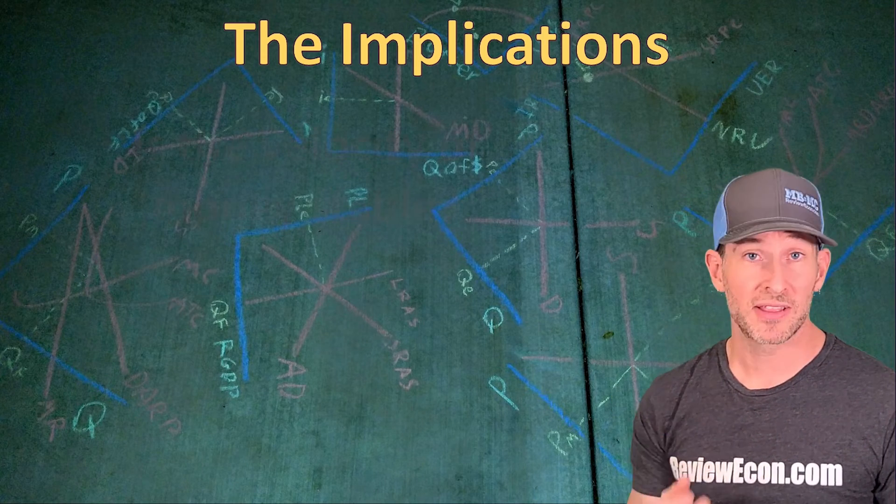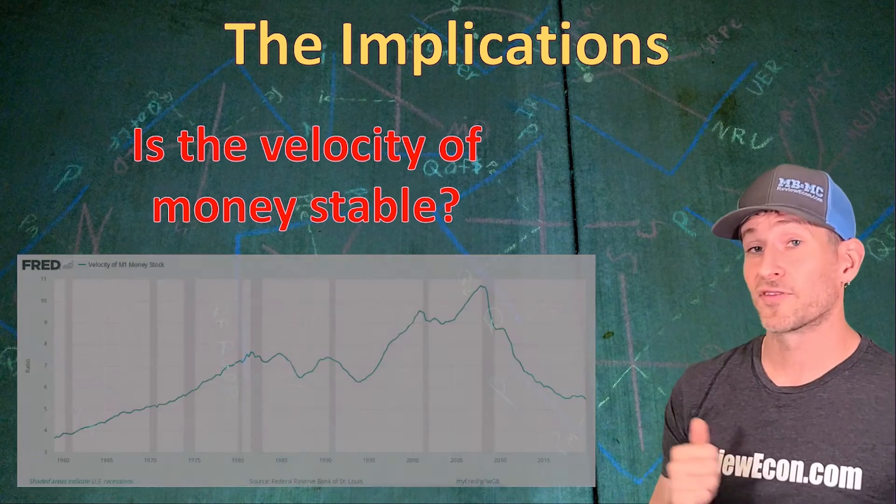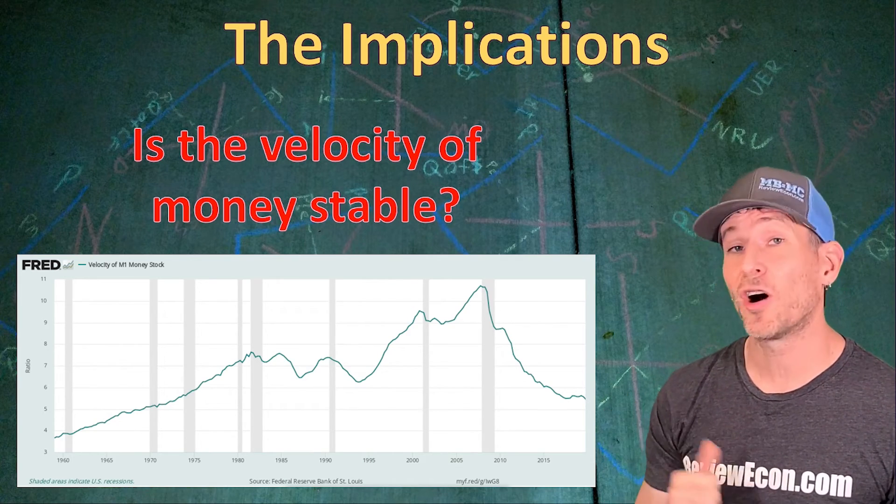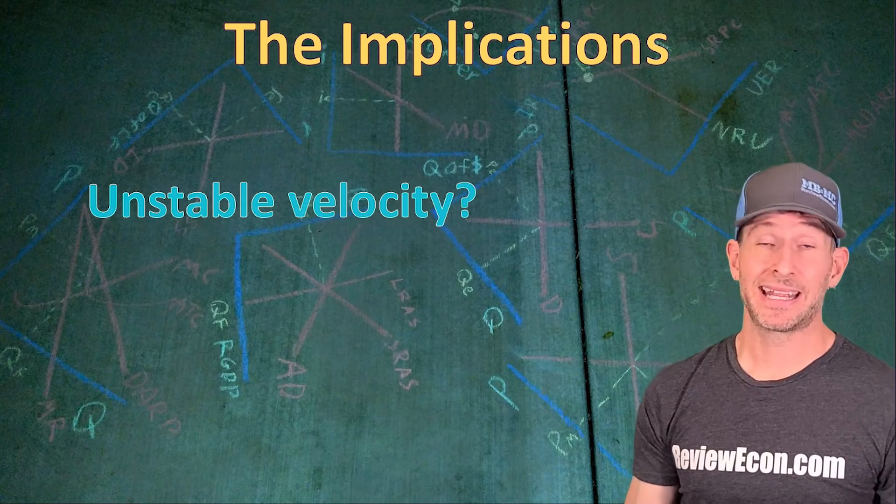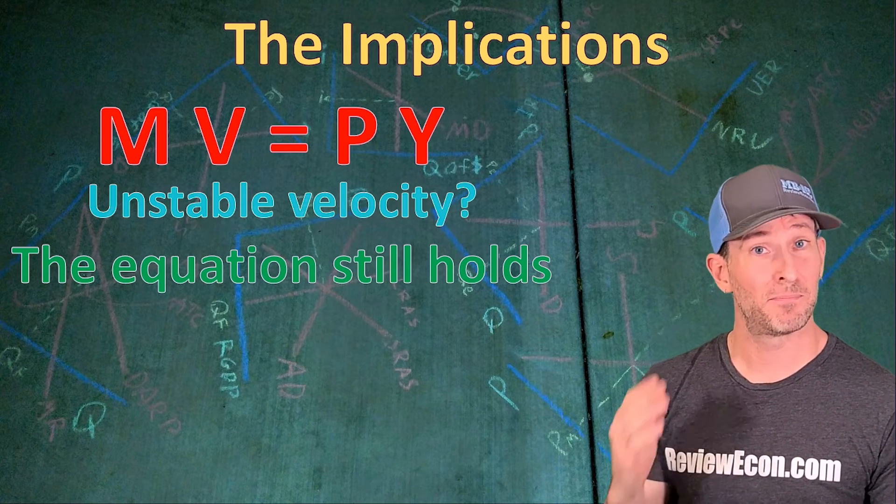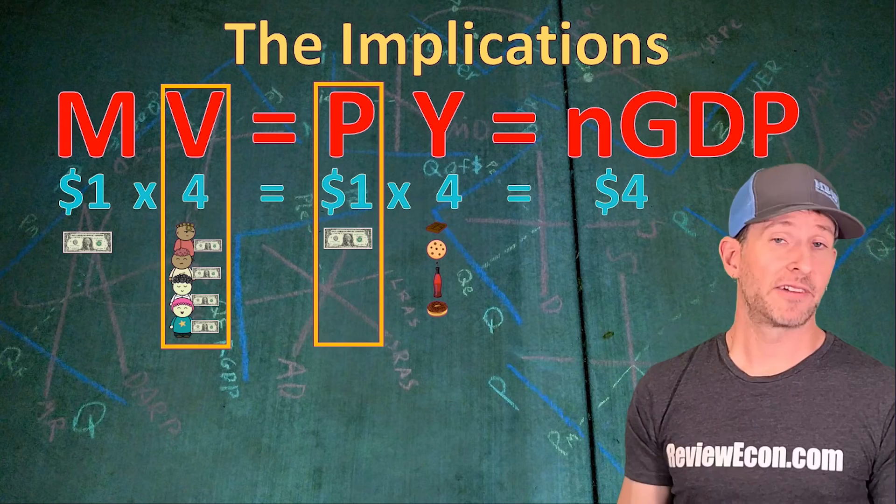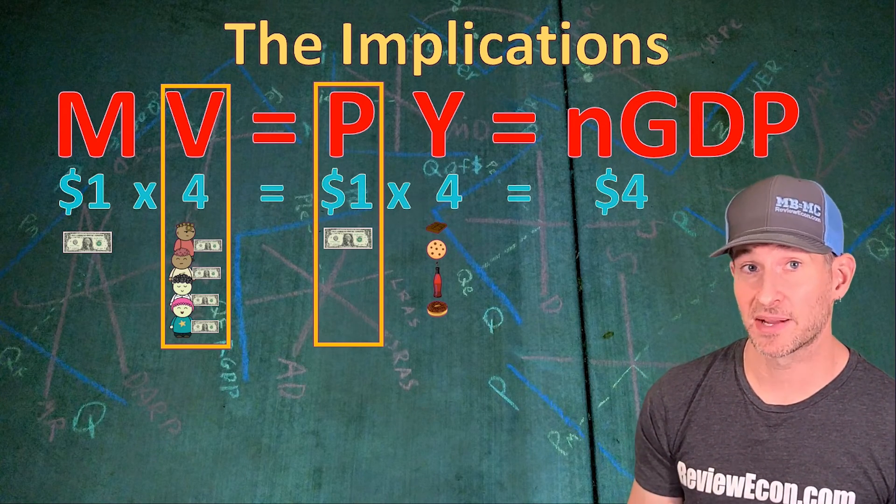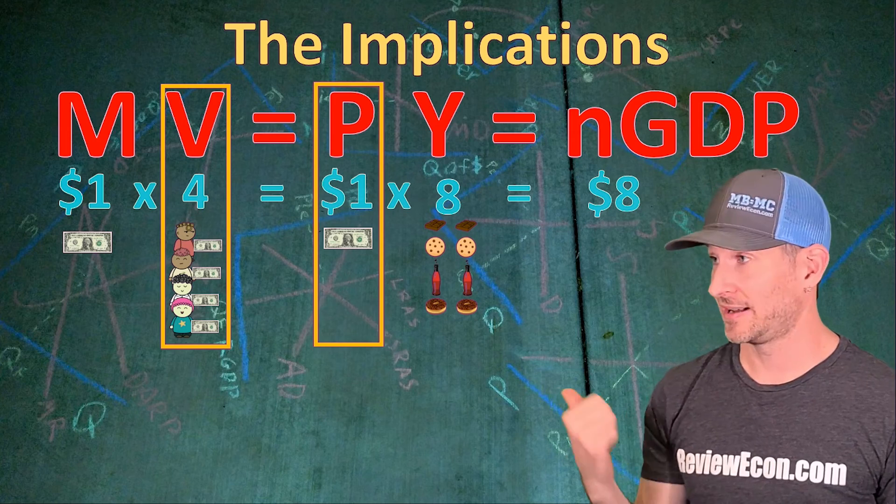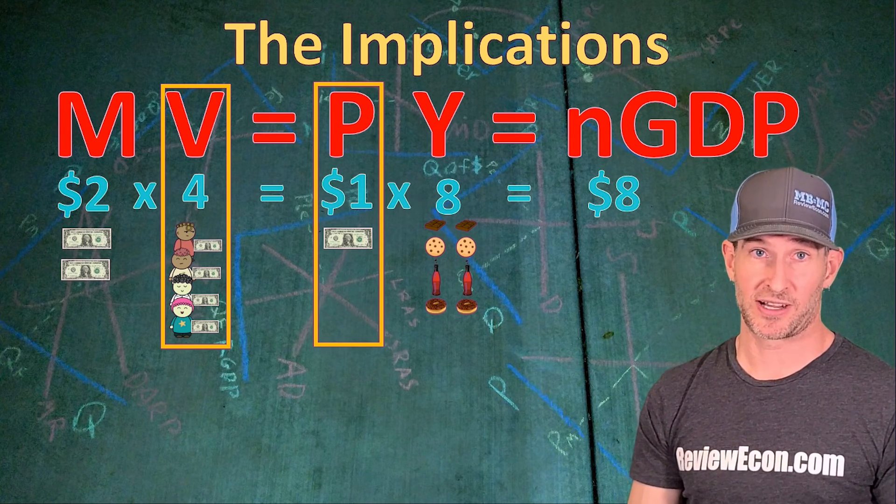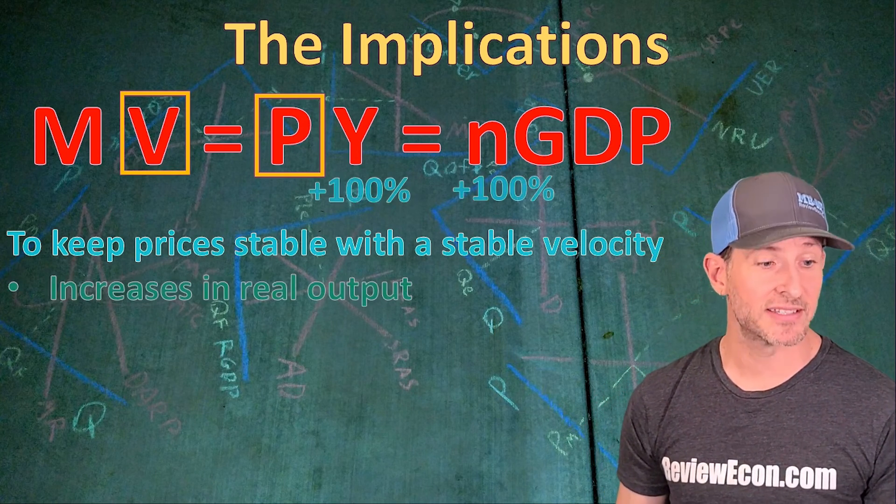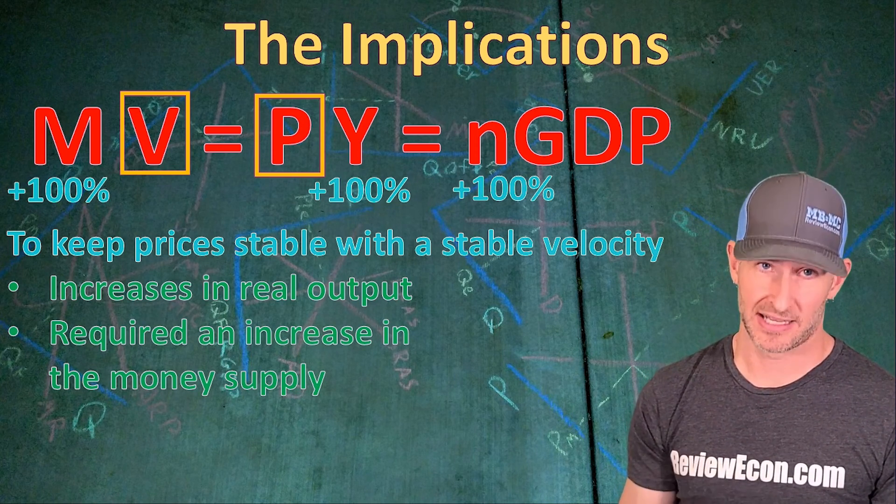So one criticism of the quantity theory of money is regarding the stability of the velocity of money. Here is a chart from the St. Louis Federal Reserve showing the velocity of the M1 money supply. And while it may remain stable in the short run, it hasn't always remained stable in the long run. But even if you believe that the velocity of money is not stable, the equation still holds. MV must equal PY. By definition, this equation is true. And if we assume that the velocity of money is stable, and we want to keep prices stable as well, if there was a doubling of the real output from 4 to 8, then that will require, in this example, a doubling of the money supply as well. And so that means that if we want to keep prices stable when there's a stable velocity of money, then an increase in real output will require an increase in the money supply as well.